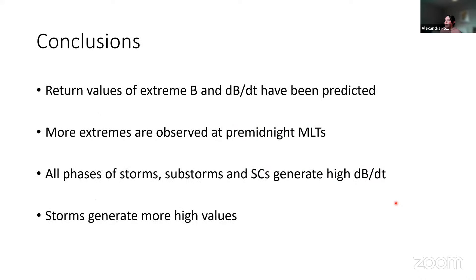So I think that's my last slide. So to conclude, I have predicted return values of extreme B and dB/dt. We're seeing more of those extremes in pre-midnight magnetic local times. And we've examined how storms, substorms and sudden commencements generate high dB/dt's and high B's. And we find that storms generally, even though there's less of them than substorms, are generating more high values, more extreme values than substorms. So I will leave my conclusion slide up there and welcome any questions.